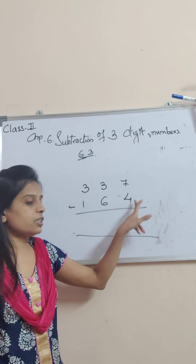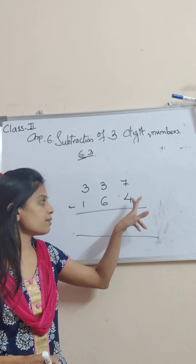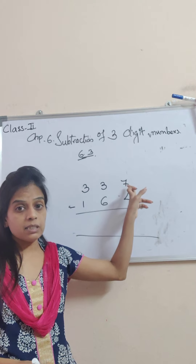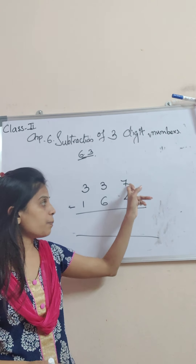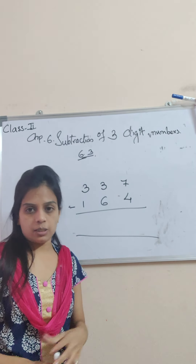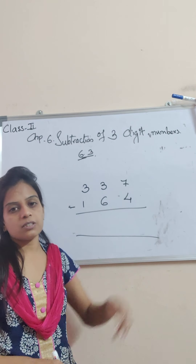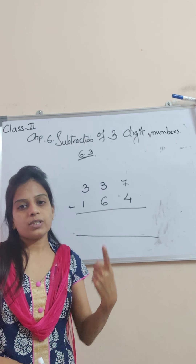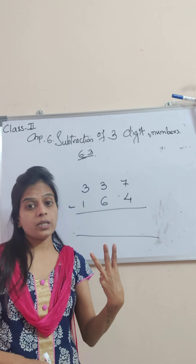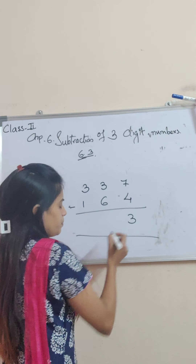One's place: 7 minus 4. How much is 7 minus 4? After 4, count till 7 — because the upper number is big here, we can easily subtract. After 4: 5, 6, 7. How many? 3. So I am going to write here 3.